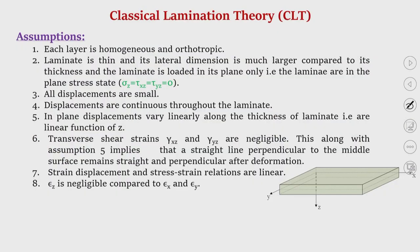Classical lamination theory is based on some assumptions. Number one: each layer is homogeneous and orthotropic. By this time we understand what homogeneous and orthotropic mean. Actually each lamina is heterogeneous, but in macro mechanical analysis we consider the lamina to be homogeneous, represented by its average properties — even though the average properties are actually functions of the constituent fiber and the matrix. So here also in classical lamination theory we assume each lamina to be homogeneous, represented by its average properties: E1, E2, ν12, and G12. Each layer is orthotropic, meaning there is no in-plane shear-extension coupling in the material direction.